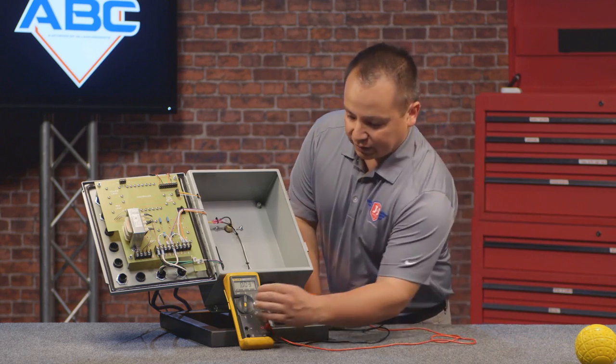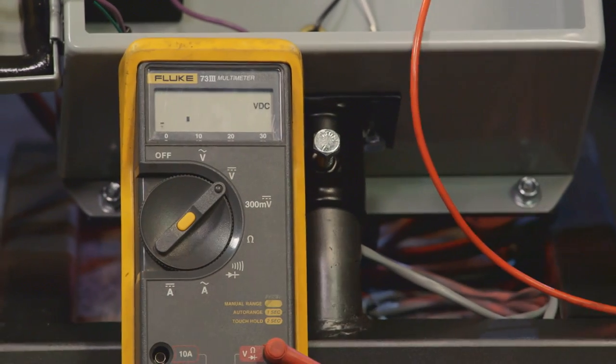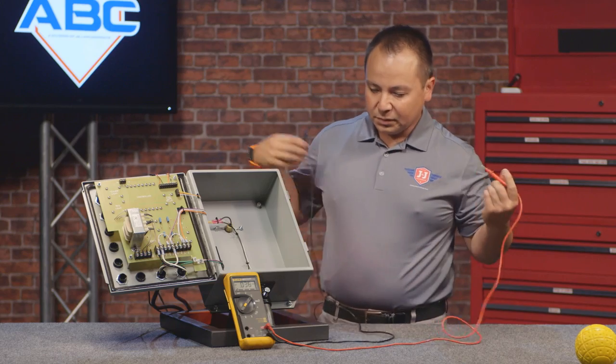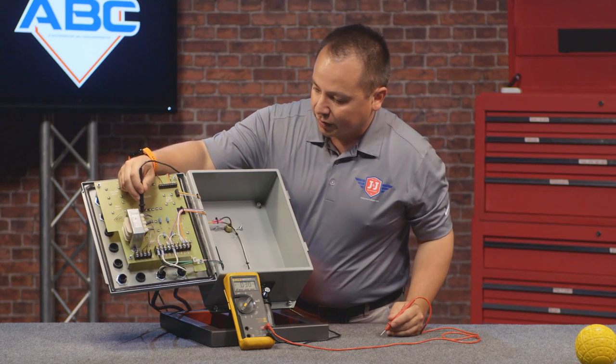And so what we're going to do next is change the multimeter to voltage DC, which is the V with the straight line up above it. Again, we're going to use our number one as our ground.